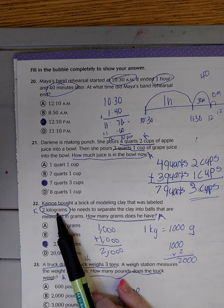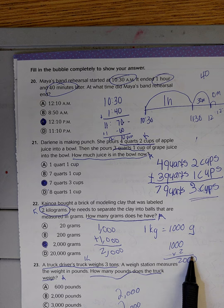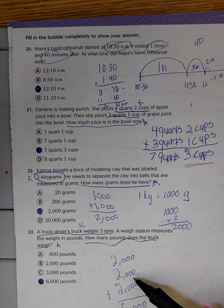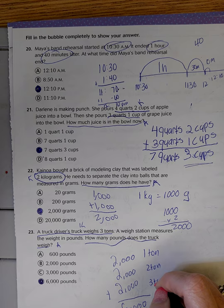Here we have two kilograms and we want to know how much that is in grams. For every one gram there's a thousand kilograms. One thousand times two is two thousand. Number 23 is the same type of problem. If we have a three-ton truck, how much is that in pounds? My friend Carlos wrote it out: two thousand, two thousand, two thousand - that's one ton, two tons, three tons. Then we add them together: it's six thousand pounds.